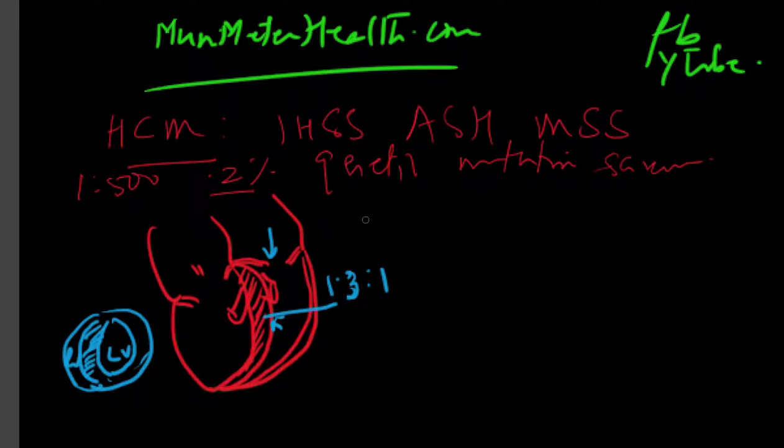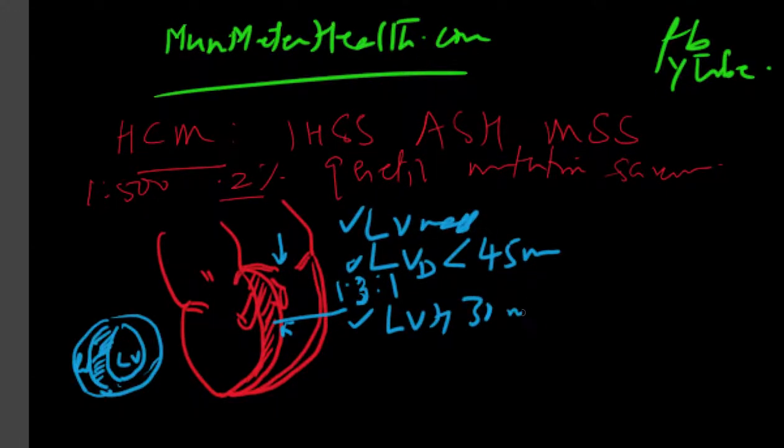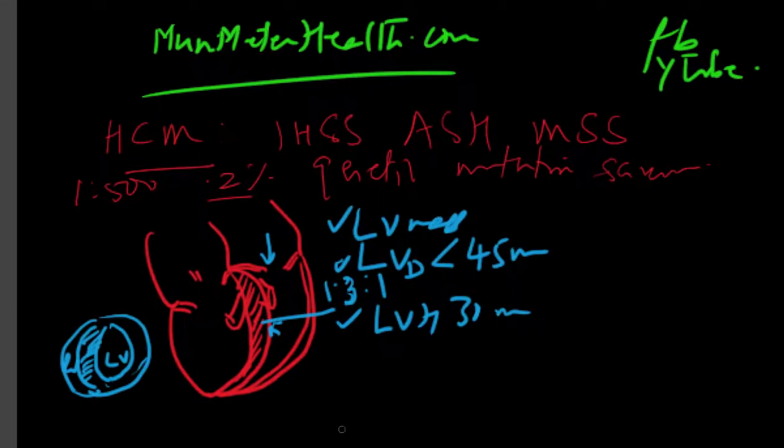What you look at is: one, the LV mass will be increased by definition because of the hypertrophy. Next, the LV cavity itself will be dilated, but not to the extent that the diastolic dimension will still be less than 45 millimeters. And three, you'll have LVH which is approximately 30 millimeters. There'll be a severe form of left ventricle hypertrophy as seen in these individuals.